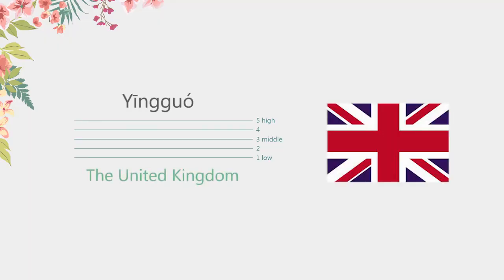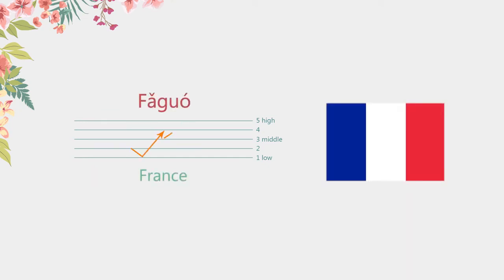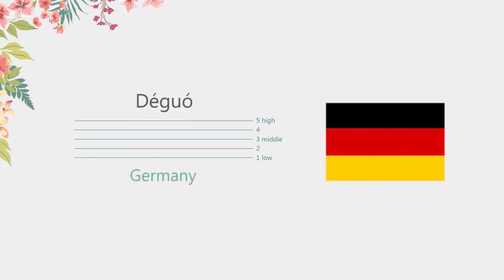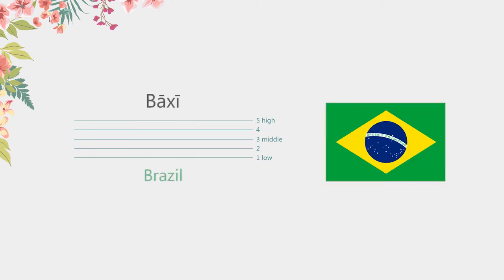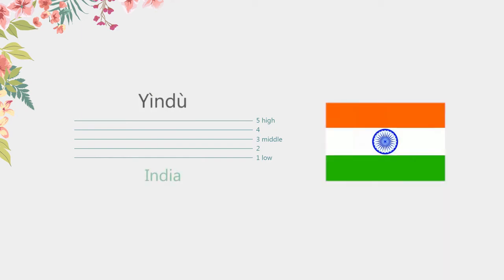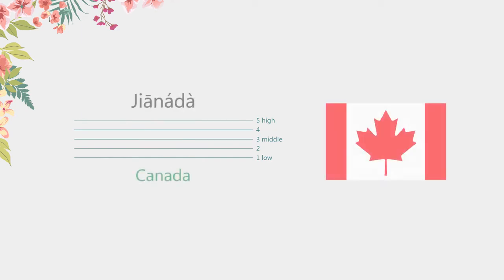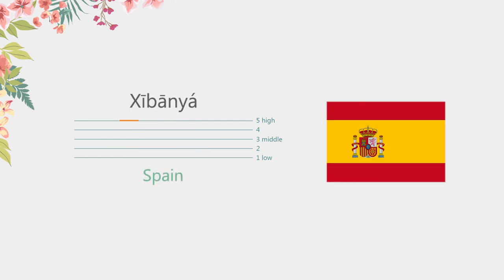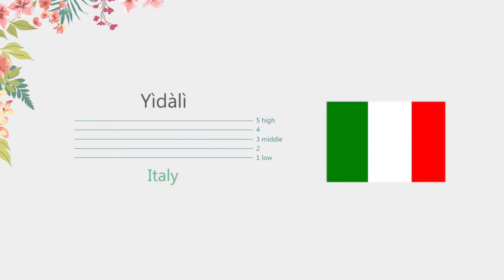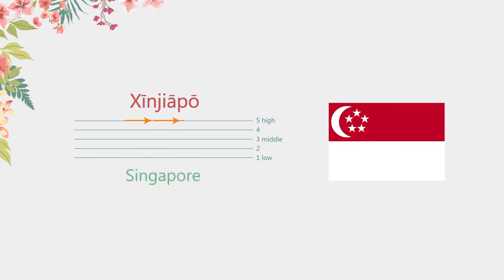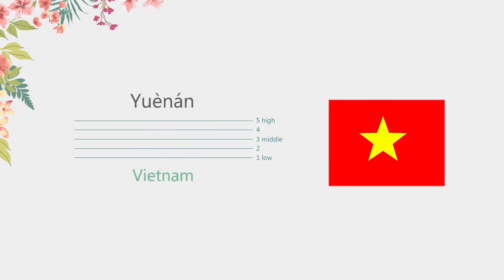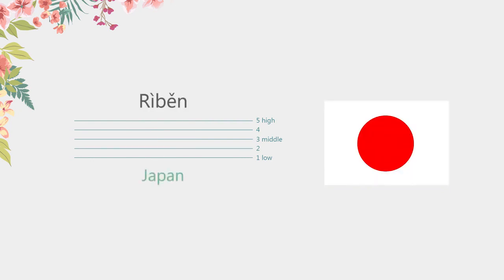Additional words for country names: The United Kingdom is 英國. France is 法國. Germany is 德國. Brazil is 巴西. India is 印度. Canada is 加拿大. Spain is 西班牙. Italy is 意大利. Singapore is 新加坡. Vietnam is 越南. Japan is 日本。